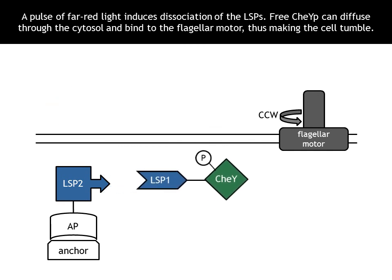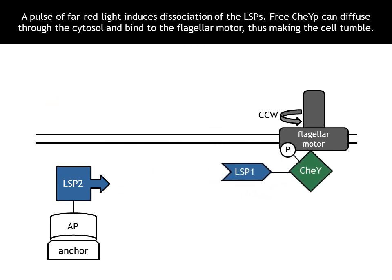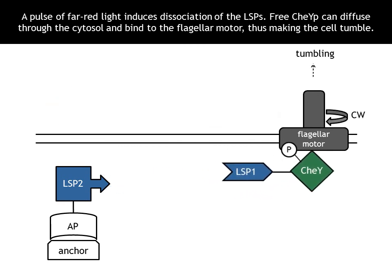A pulse of far-red light induces dissociation of the light-sensitive proteins. Free CheYP can then diffuse through the cytosol and bind to the flagellar motor, thus making the cell tumble.